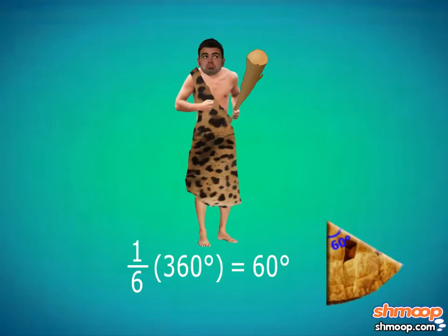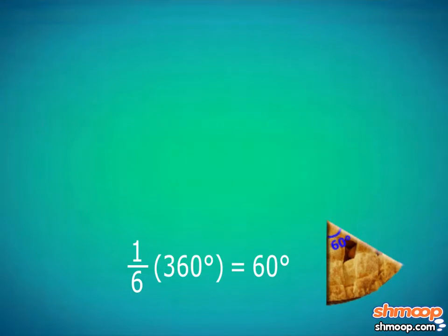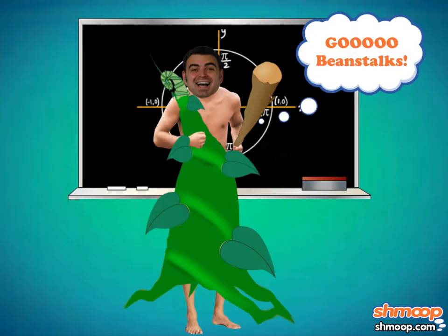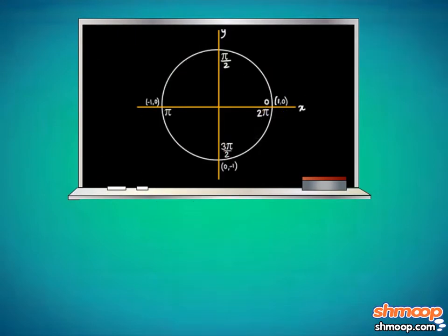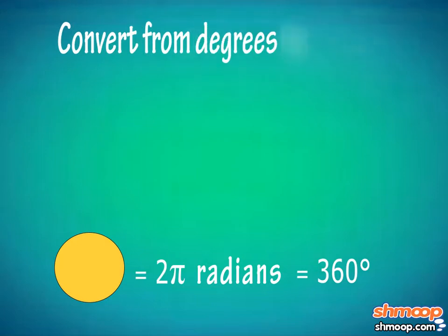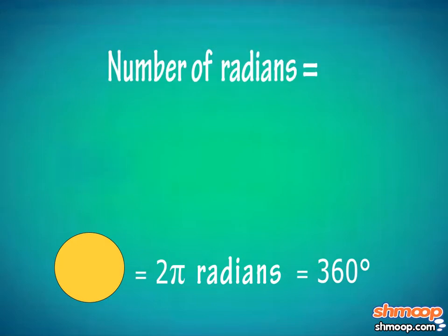Because giants are always challenging themselves, Tommy wonders if he can convert the number of degrees in his slice to radians. Back at Giant High, Tommy learned that a full circle has 2π radians, which is equal to 360 degrees. So to convert from degrees to radians, all he has to do is multiply the number of degrees by π over 180.